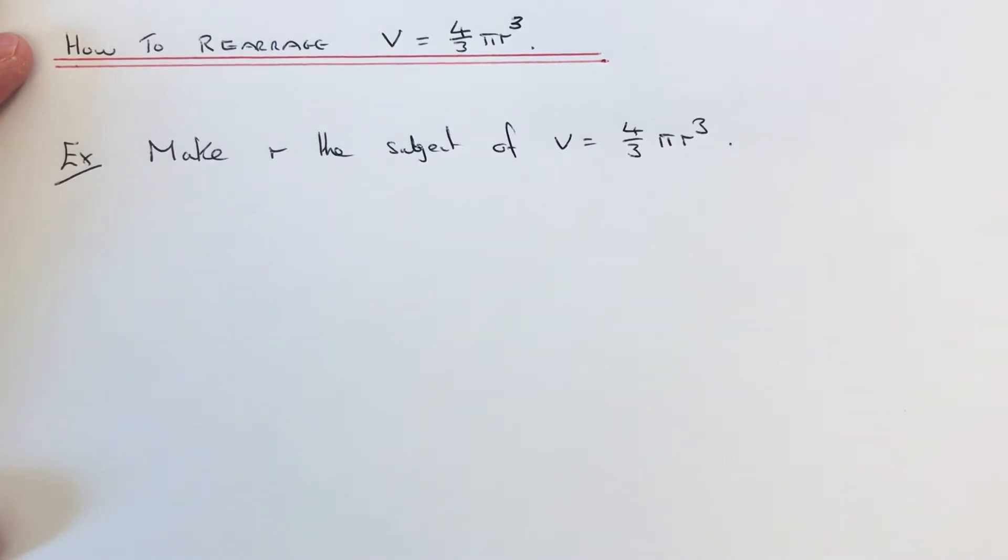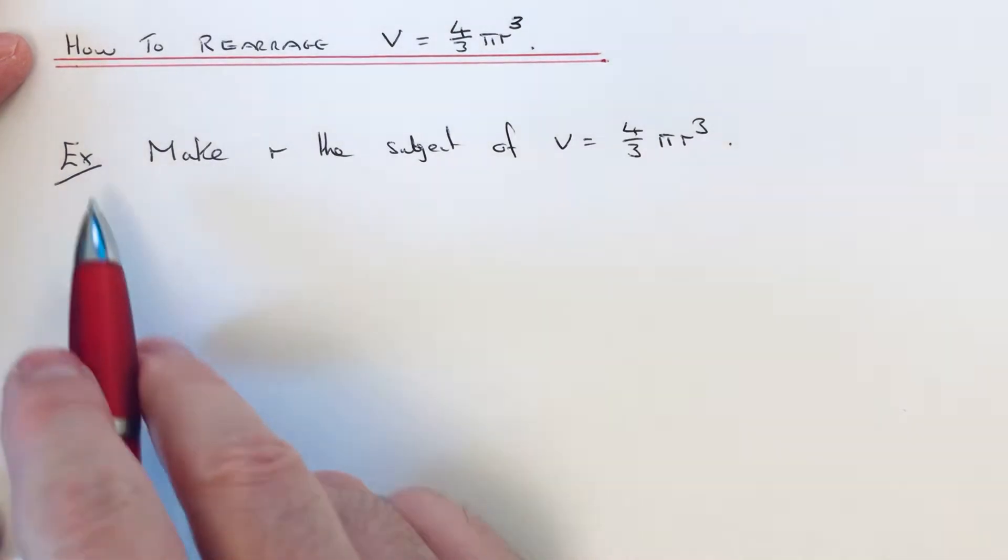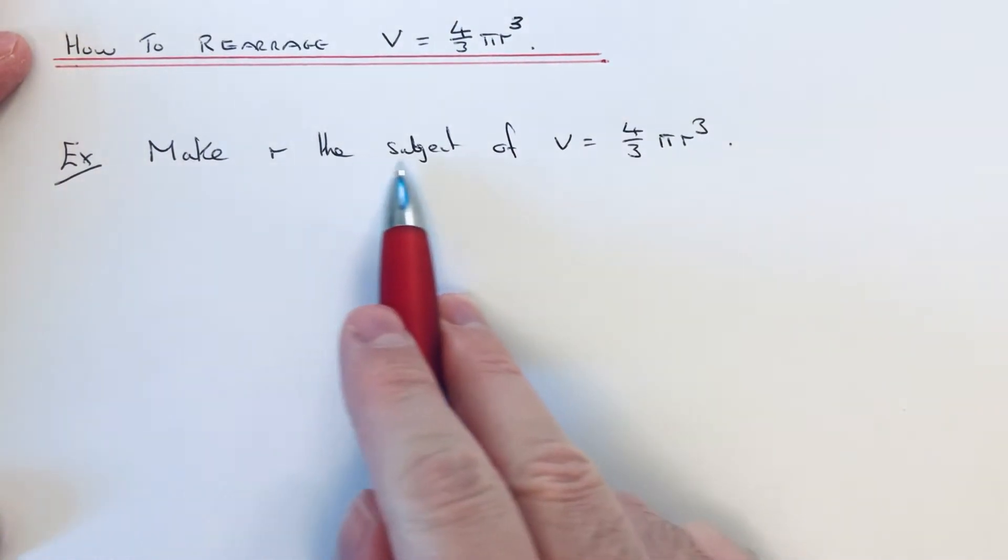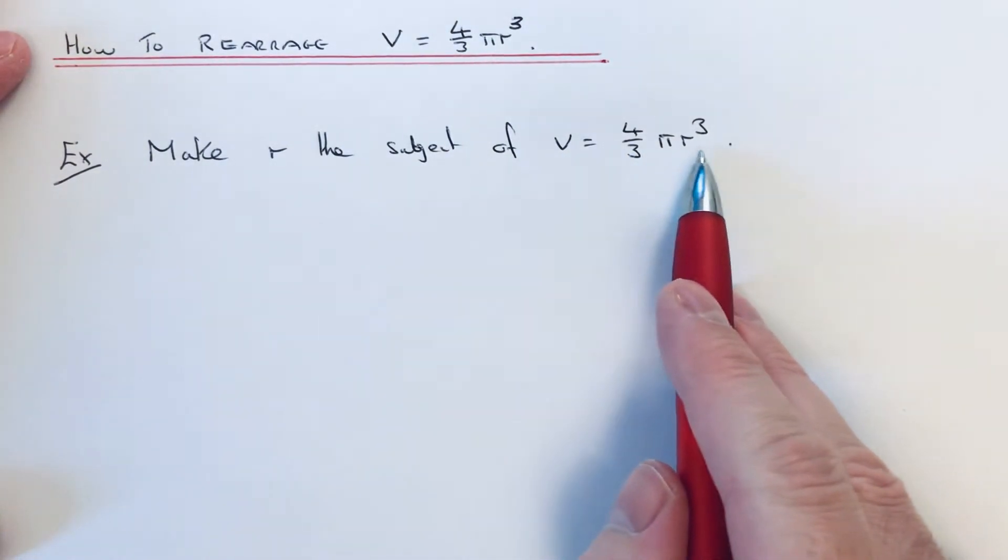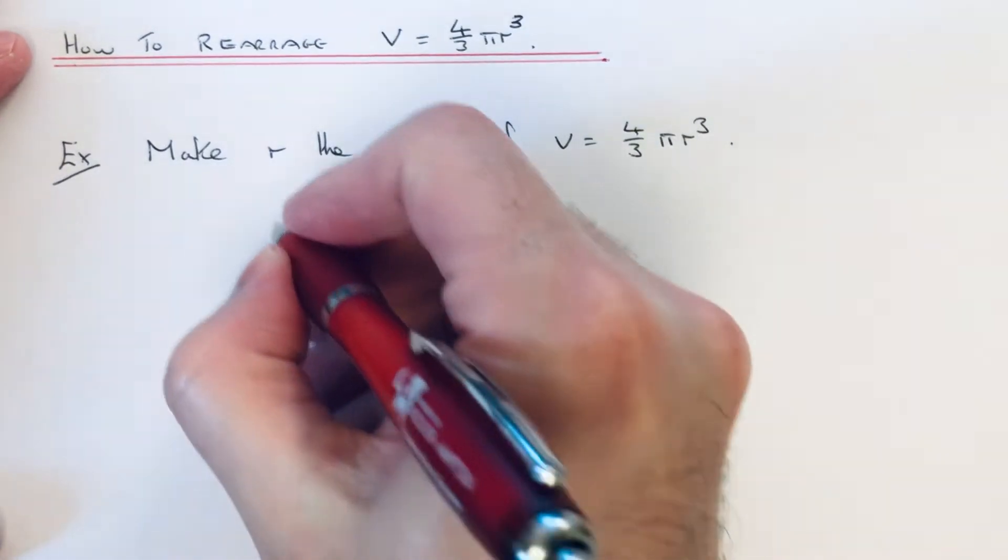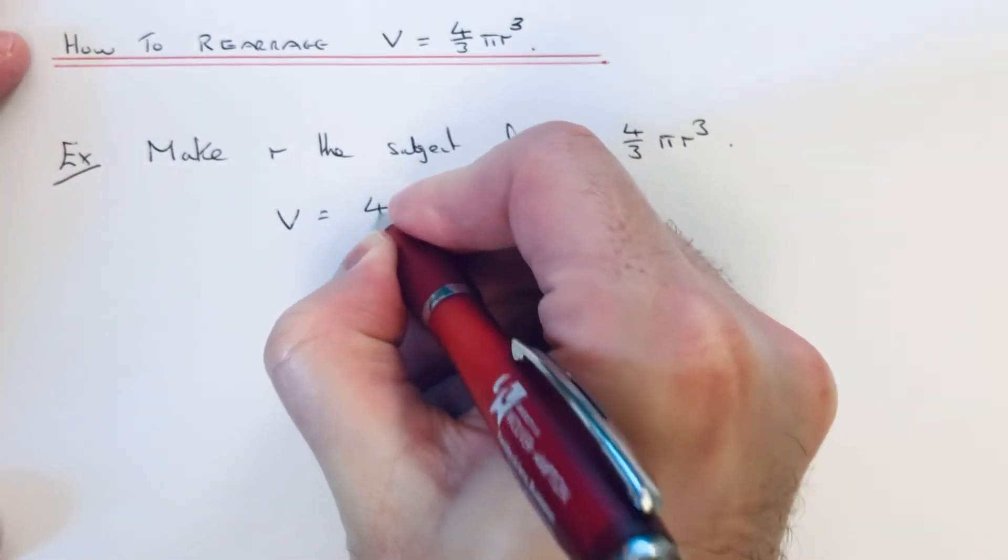So let's have a look at the example then. We've got make r the subject of V = 4/3 π r³. So let's just copy down the formula again.